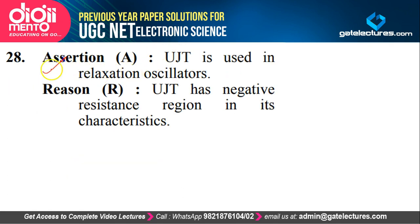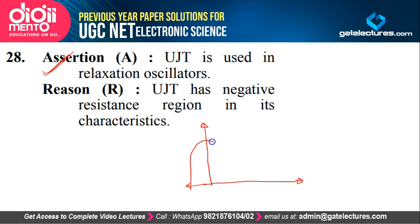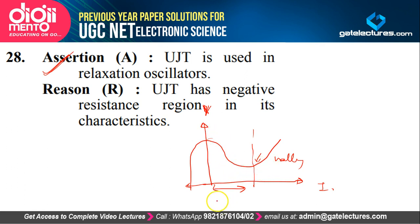Question 28: Assertion — UJT is used in a relaxation oscillator. This is true. Reason — UJT has a negative resistance region in its characteristics. This is also true; UJT is famous for this negative resistance region, where increasing voltage leads to decreasing current. We operate the UJT in this negative region only. And we use it in relaxation oscillators precisely because of this negative resistance region. So the reason explains the assertion — answer is option A.